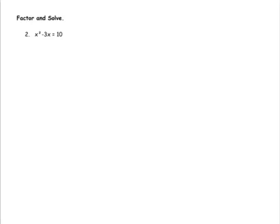Anytime we start to factor, we have to set it equal to zero first. It's the only way you're going to do it with factoring, because we use the zero product property.